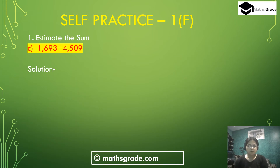Now question 1, part C: 1,693 plus 4,599. We have to round off these numbers to the nearest 1,000 place. This is a 4-digit number, so we round up to the nearest 1,000.